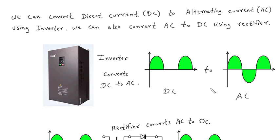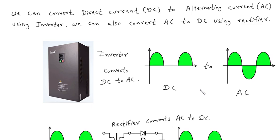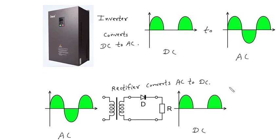We can also convert AC to DC using rectifier. Inverter converts DC to AC and rectifier converts AC to DC.